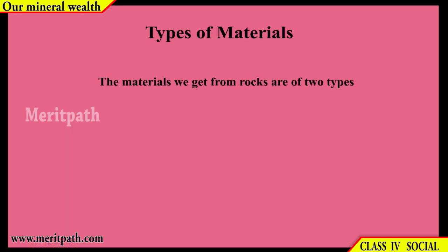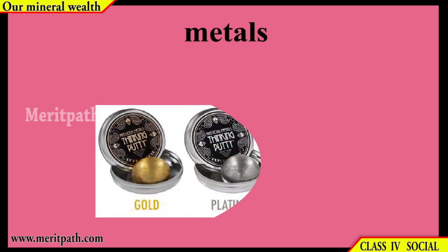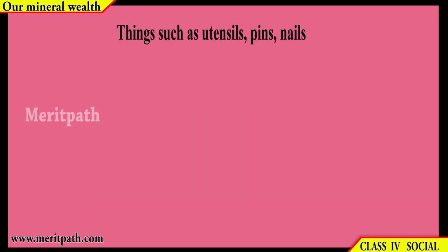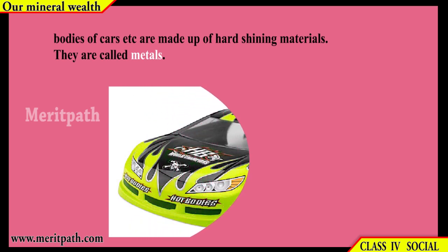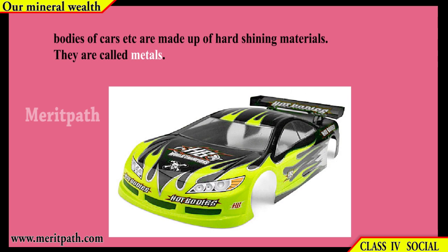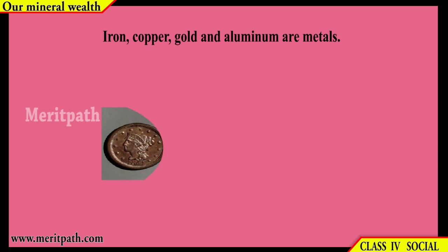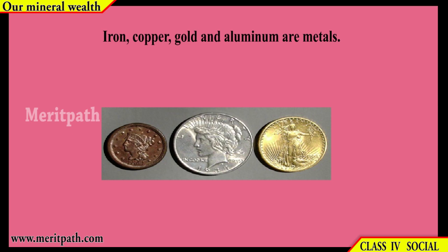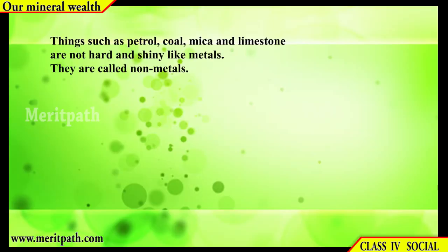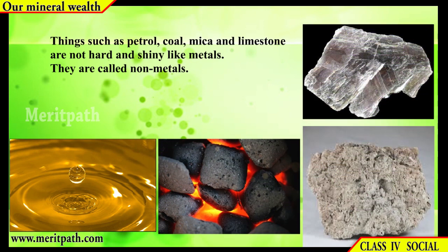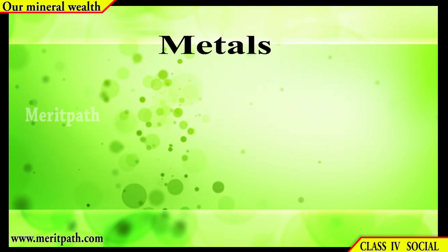The materials we get from rocks are of two types: metals and non-metals. Things such as utensils, pins, nails, and bodies of cars are made up of hard, shining materials — they are called metals. Iron, copper, gold, and aluminium are metals. Minerals from which metals are obtained are called ores. Things such as petrol, coal, mica, and limestone are not hard and shiny like metals — they are called non-metals.